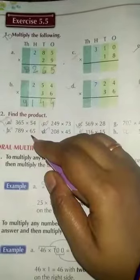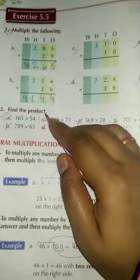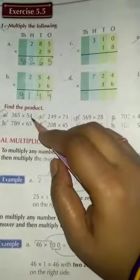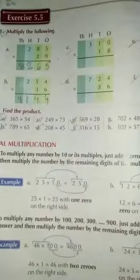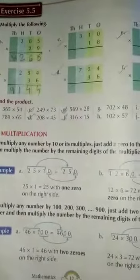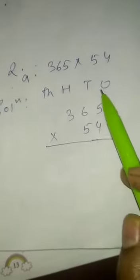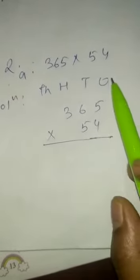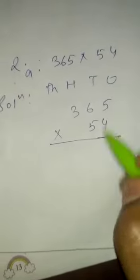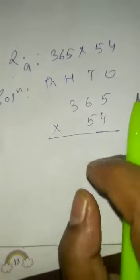Now let us start question number 2. Question given: find the product. So to find the product we have to solve this question in our copy. This question is similar to question number 1. So let us start. I have arranged the numbers, and I will solve this using the second method.